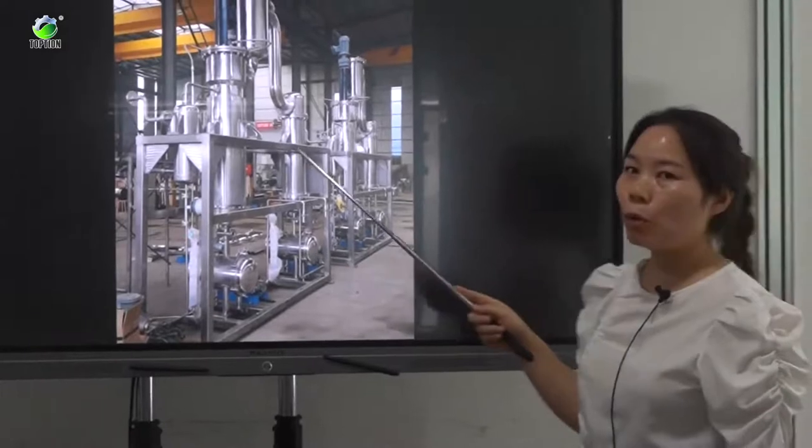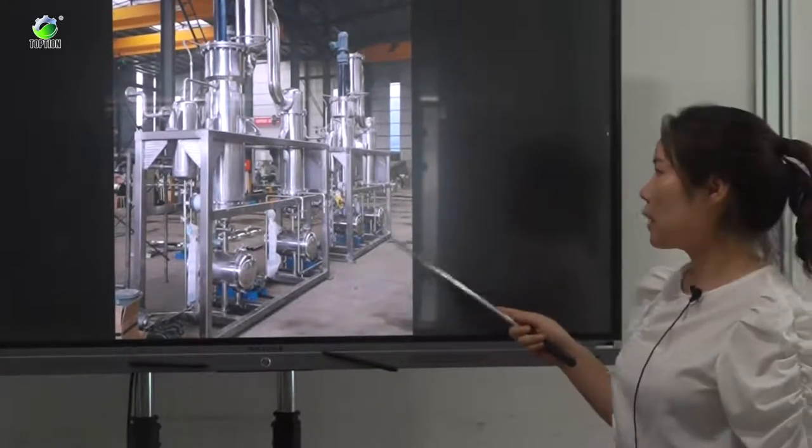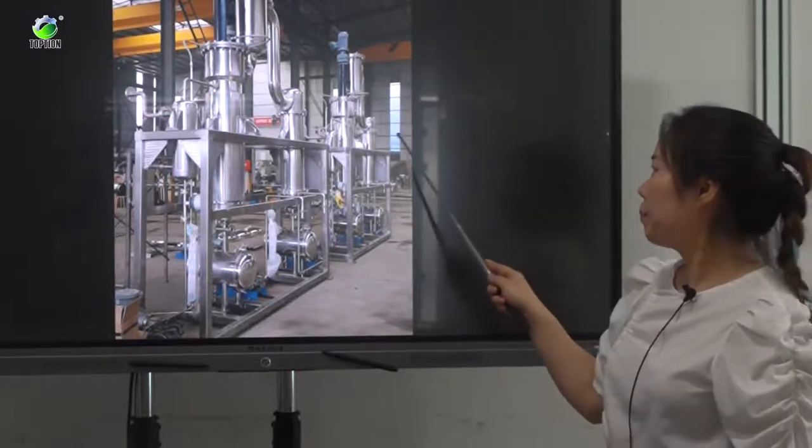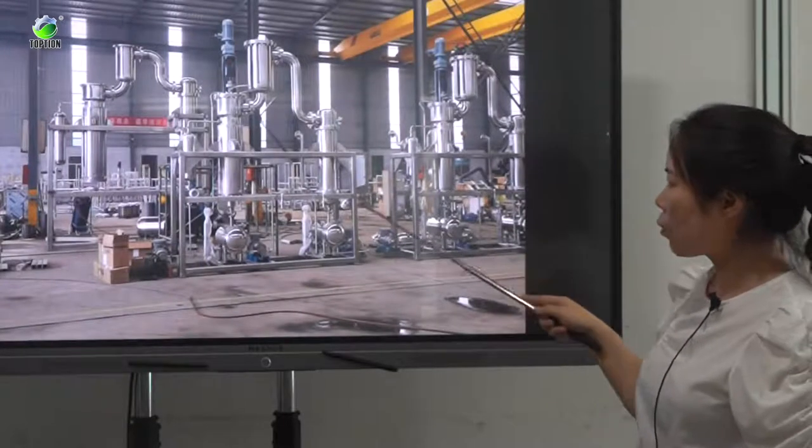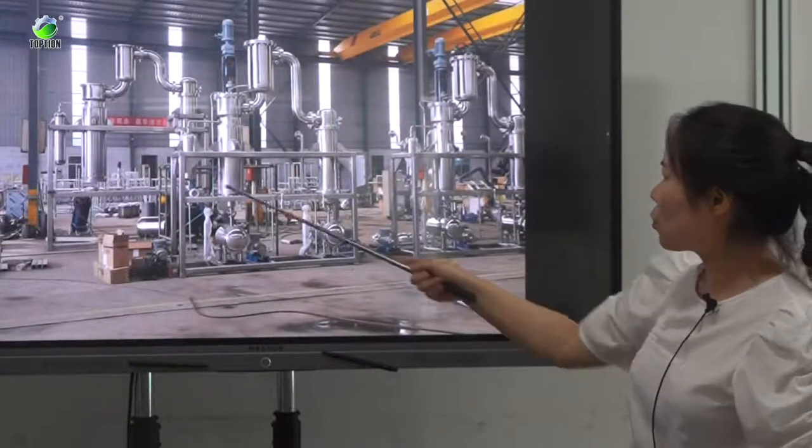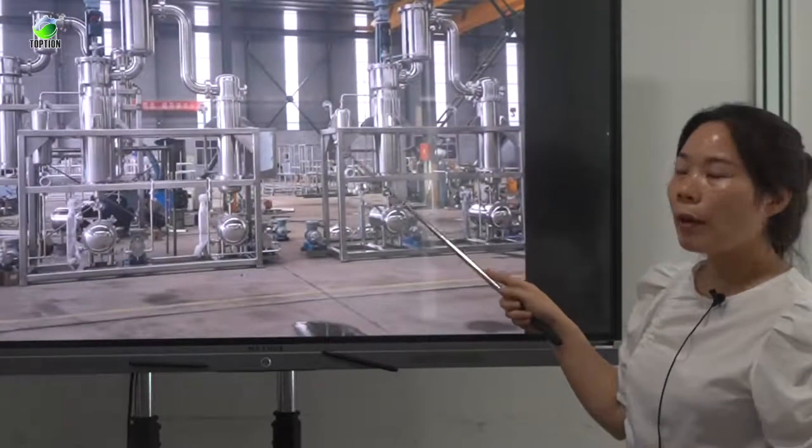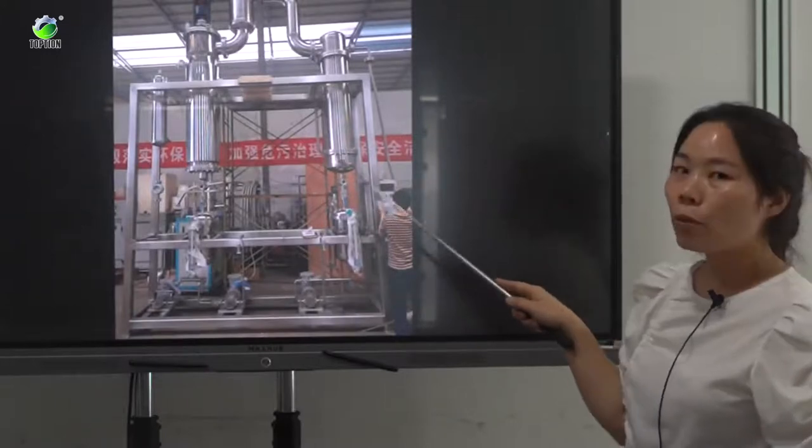Here are some photos of our shipped products of wiped film evaporator. This is the one square meter. This is also one square meter. And this is two square meter. And this is larger three square meter.